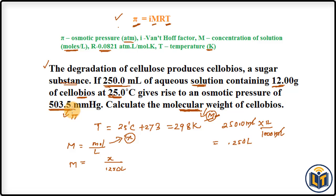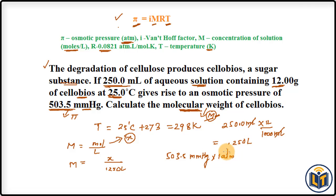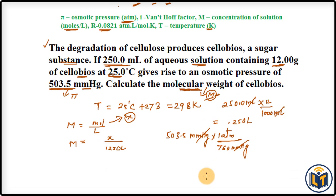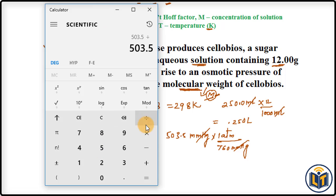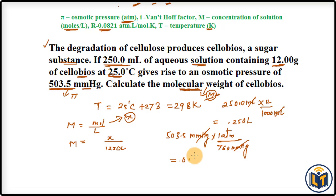The osmotic pressure is given as 503.5 mmHg, but the formula requires ATM. We convert: 503.5 mmHg × (1 ATM / 760 mmHg) = 503.5 / 760 = 0.6625 ATM.